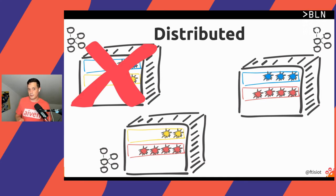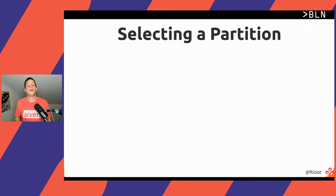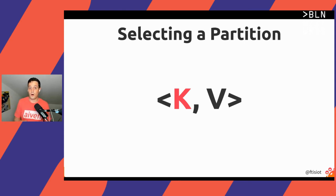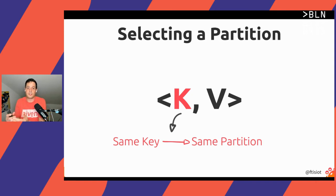Now it's interesting to understand how you select a partition when you create a topic with multiple partitions. You do that usually using the key part of the message. What Kafka does by default is it takes the key, hashes it, and takes the result of the hash to drive the partition selection, ensuring that all messages having the same key will end up in the same partition. However, you can write your own custom partitioner, or you can send messages without a key, in which case Kafka will select a partition in round-robin fashion.